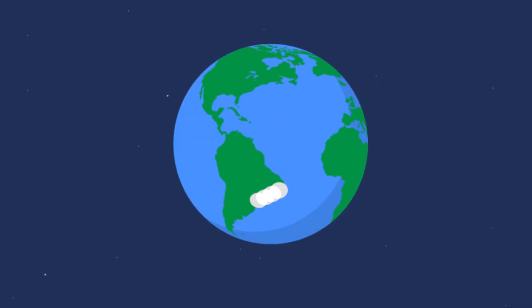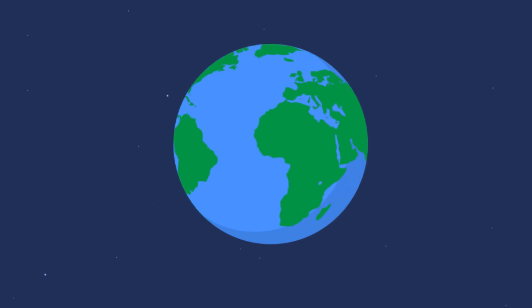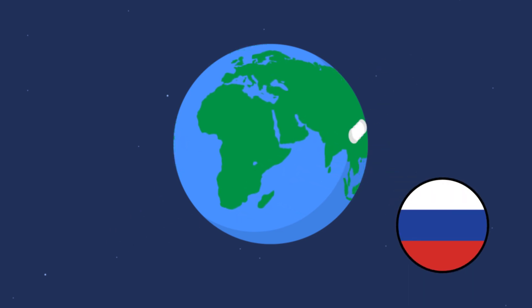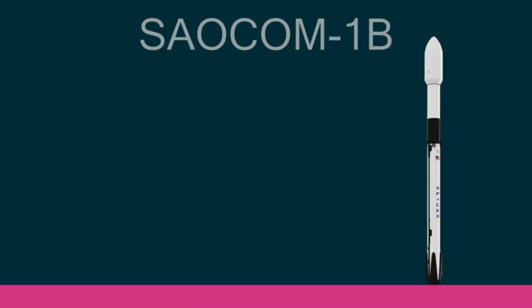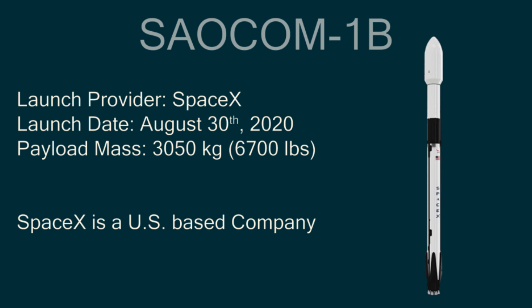The first assumption has to do with the launch provider. In this data, we are talking about orbital rocket launches. So when I say a country is responsible for an orbital rocket launch, that country is essentially developing the rocket, not necessarily the payload. A perfect example of this is SpaceX launching the SAOCOM-1B mission. SpaceX is a United States-based company, so this was a United States rocket launch, even though the payload — the actual communications satellite — was an Argentinian-based satellite.